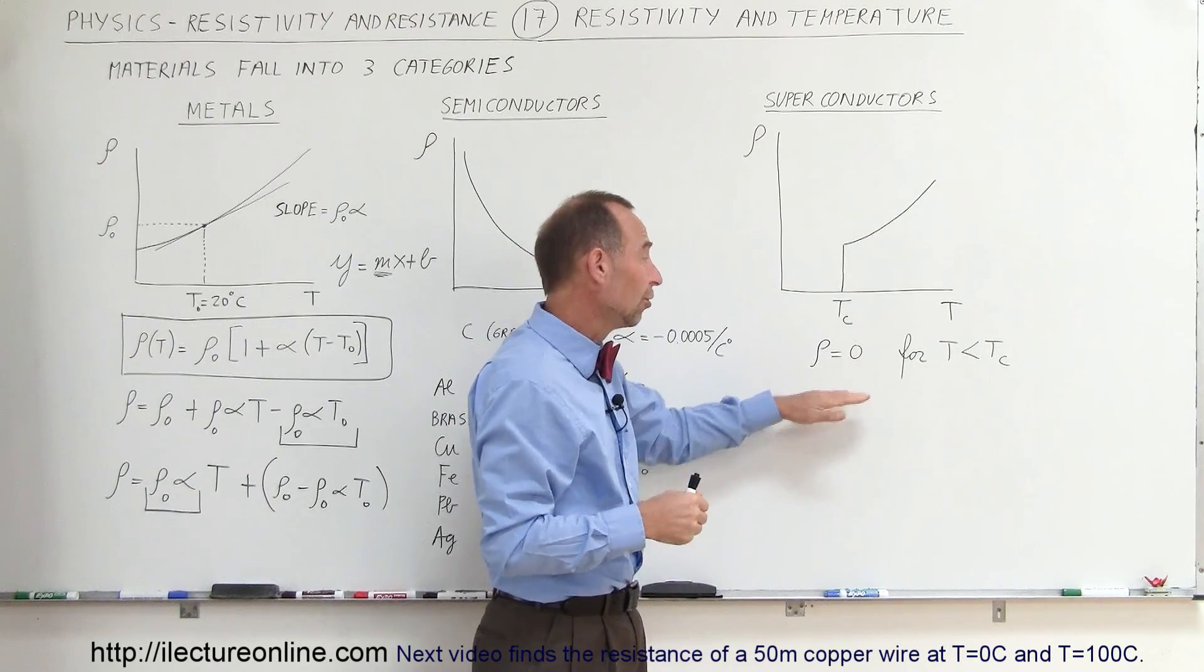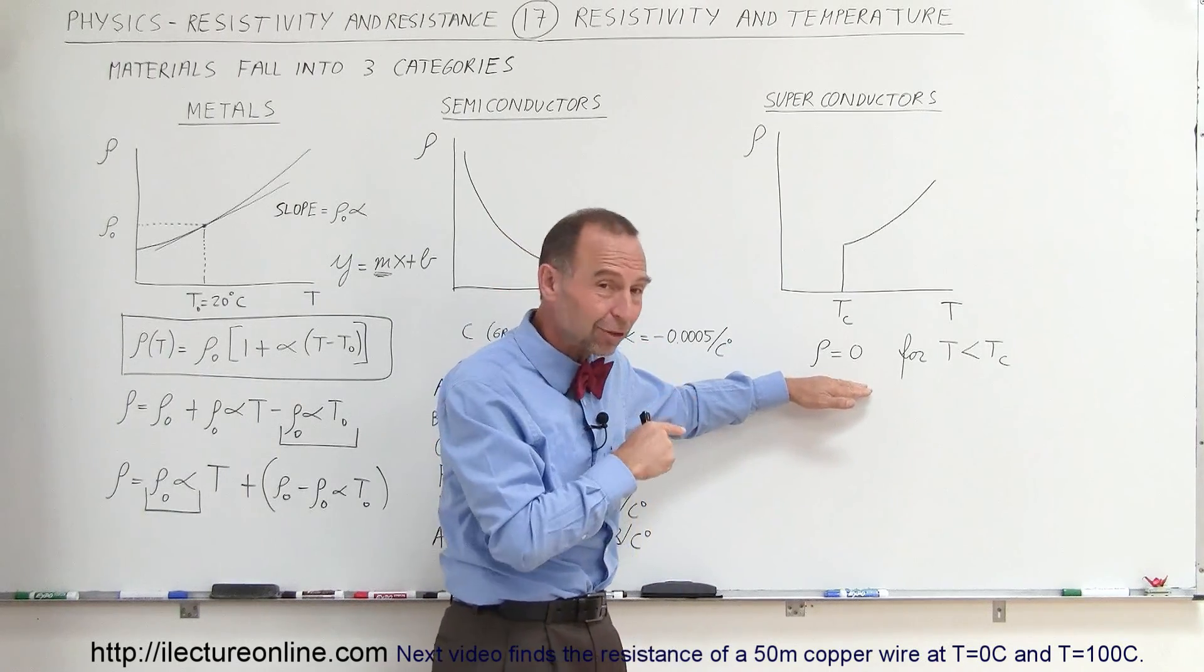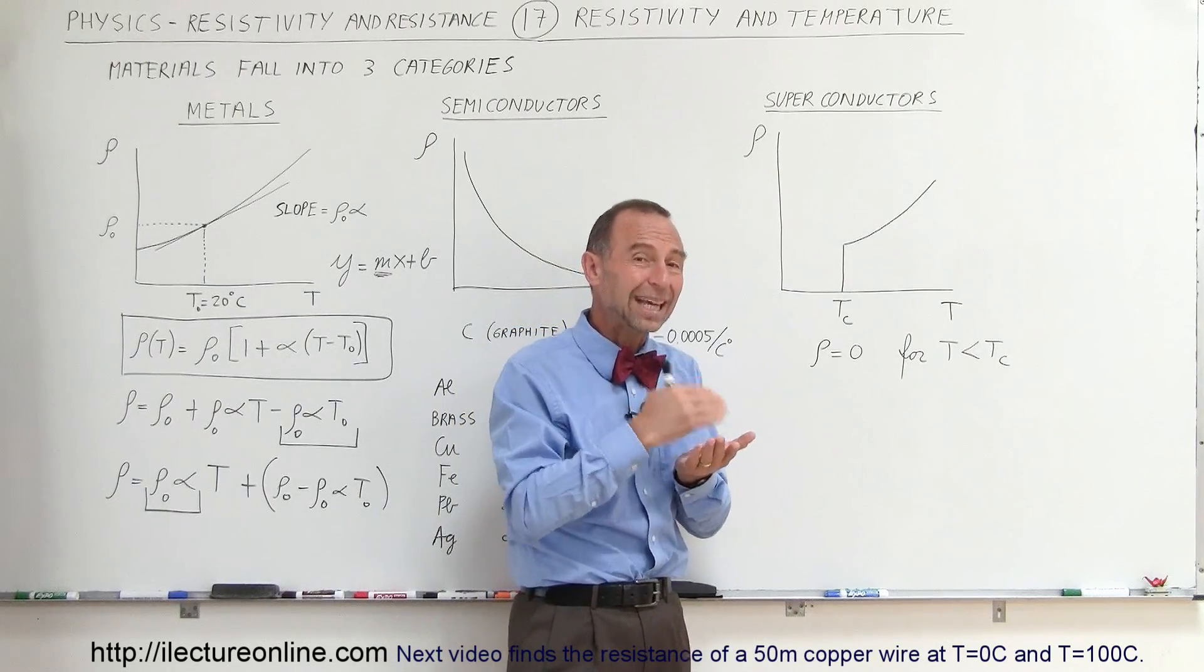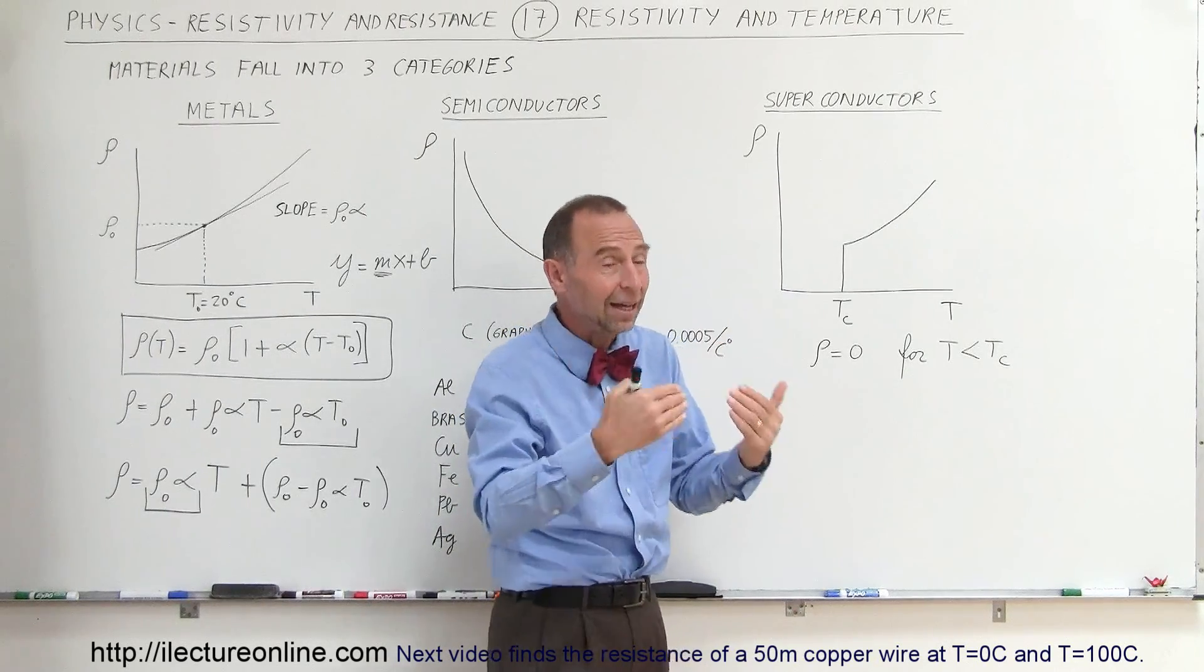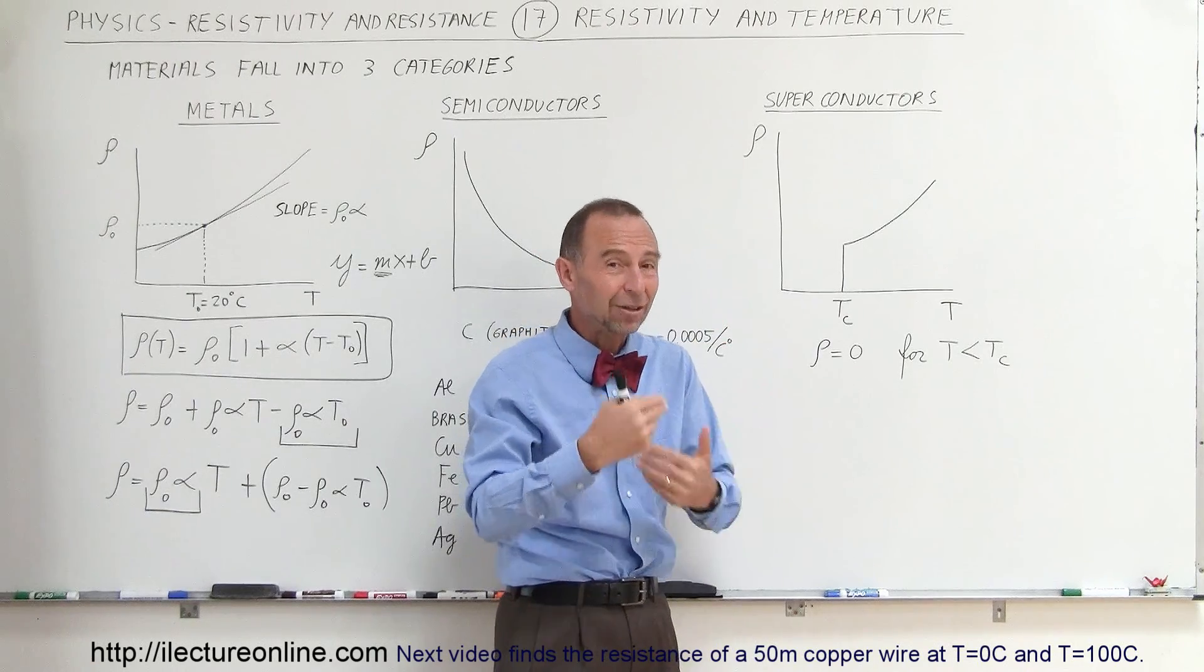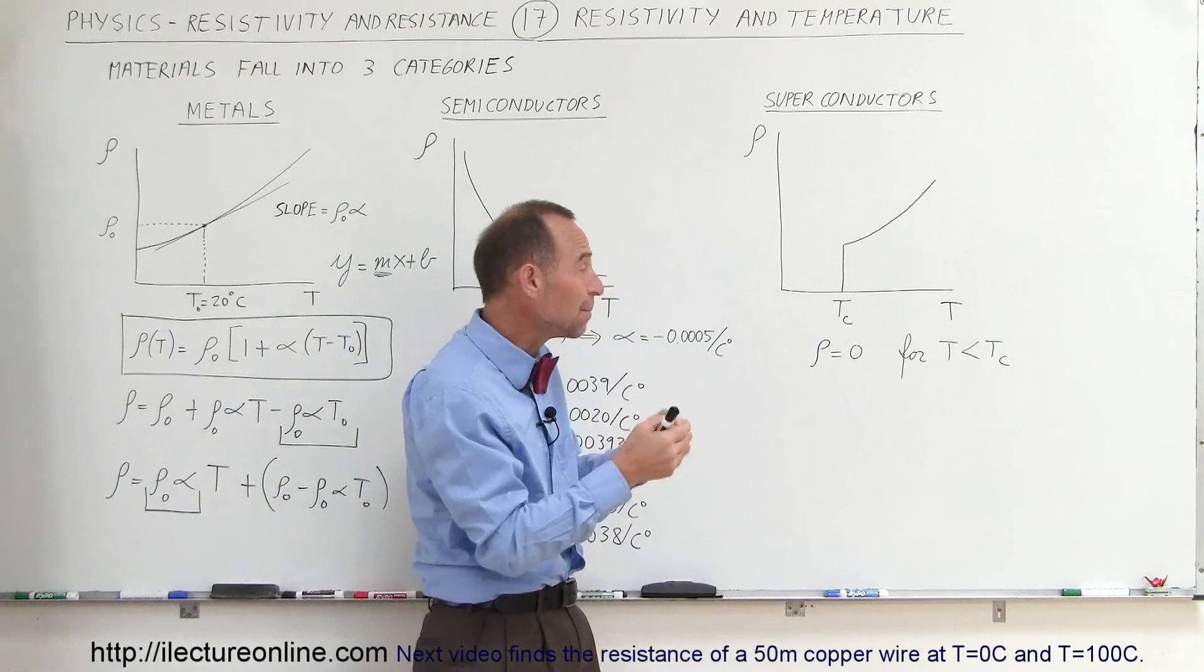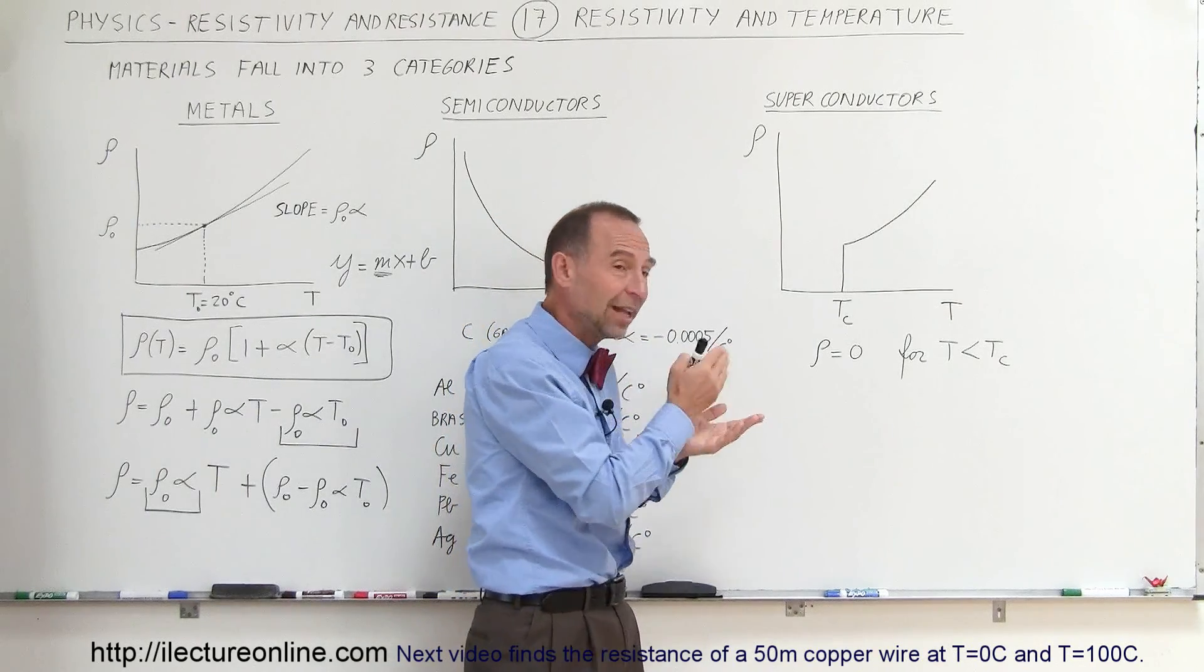Some recent developments in superconductors have actually shown that, I believe at temperatures as low as 130 Kelvin, which is really quite high when you think about it—still very cold but quite high—so that you can actually cool it with liquid nitrogen instead of liquid helium, we've been able to find some alloys that have superconductivity properties at relatively high temperatures.